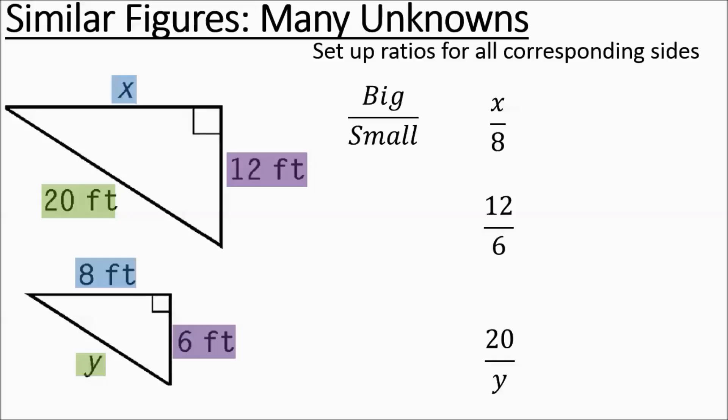We see one of these ratios has numbers in the numerator and denominator. That's the one we're going to use to figure out the common ratio. We get it in lower terms. So that means all of the other sides should be equal to 2 to 1 as well. So I'm going to set the top and bottom ratios equal to 2 to 1. So now we have some proportions.